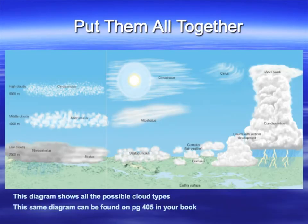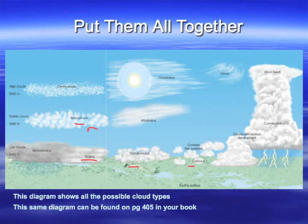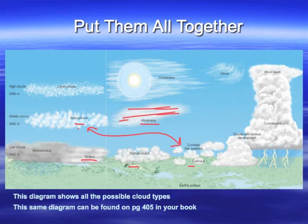If you put them all together you'd see something like this. Low level clouds: stratus, stratocumulus, cumulus. Medium level clouds: altocumulus — notice the difference from regular cumulus, which are bigger and lower to the ground, while altocumuluses are higher up, more spread out, and smaller. You also have altostratus: higher up layers and a little bit thinner.